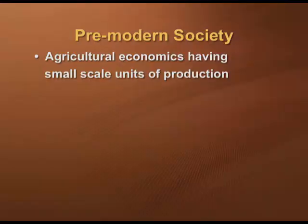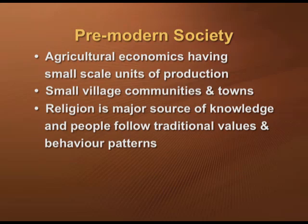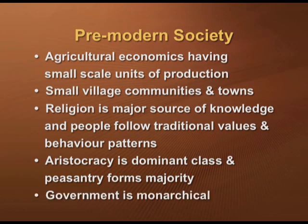Let us look at the difference between modern and pre-modern types of societies and social structures. The pre-modern type of societies are agricultural economies having small scale units of production. They have small village communities and small towns. In pre-modern societies, religion is the major source of knowledge and people follow traditional values and behavioral patterns. Aristocracy is the dominant class and peasantry forms the majority. The government is monarchical.